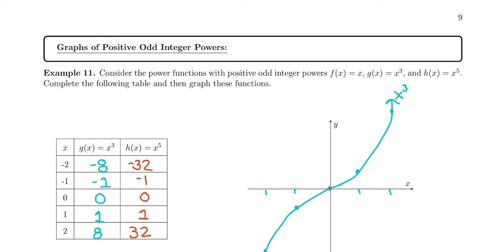So they start out similarly. They have 0, 0, and 1 with negative 1, or negative 1 with negative 1, and 1 with 1. But then 2 is going to be way up with 32, and negative 2 is going to be way down with negative 32.